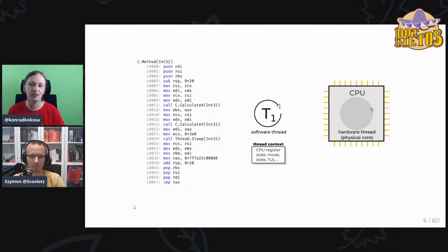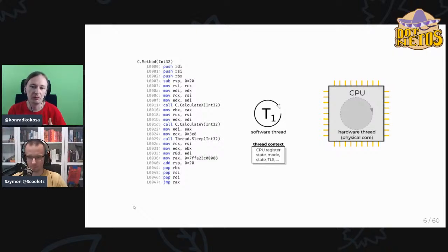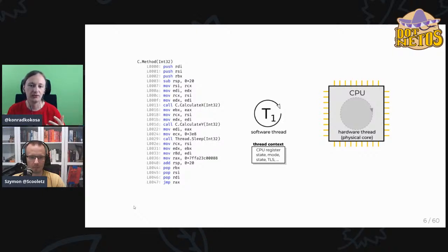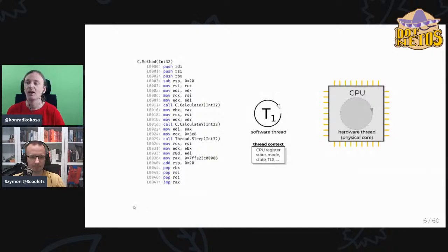A software thread is a description of what should be executed. It has context including CPU registers, the state of the thread, the mode (whether it's in kernel mode or user mode), and other data. We can imagine operating systems for very low-level microcontrollers not having software threads, but obviously the systems we use do. So we have hardware threads — real physical elements inside the CPU — and software threads, the general concept.